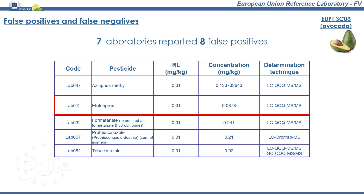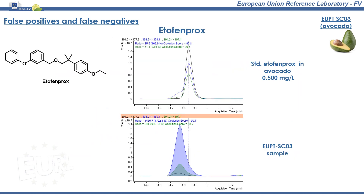Resuming the previously shown list, the next one is etofenprox. This pesticide was reported by one laboratory as present in the EUPT sample. However, this was a false positive result as etofenprox was not part of the present pesticides. As opposed to the case of fosmet and azimphosmethyl, the false positive result was not due to another pesticide, but due to a co-extracted matrix component that eluted at a very similar retention time as etofenprox.